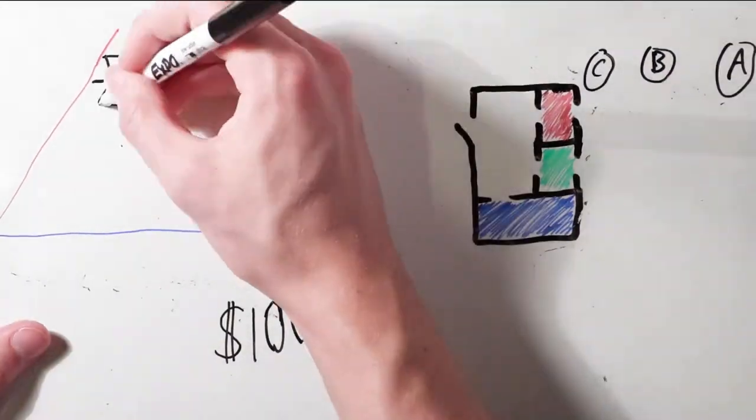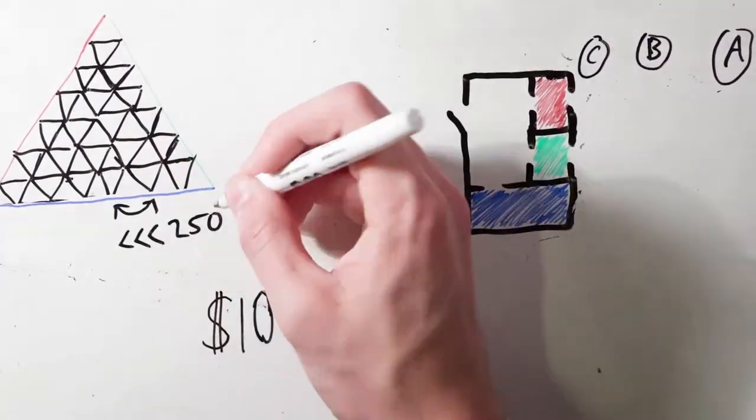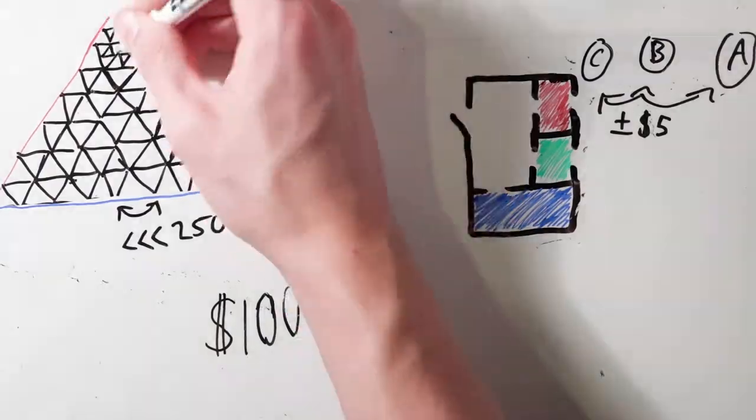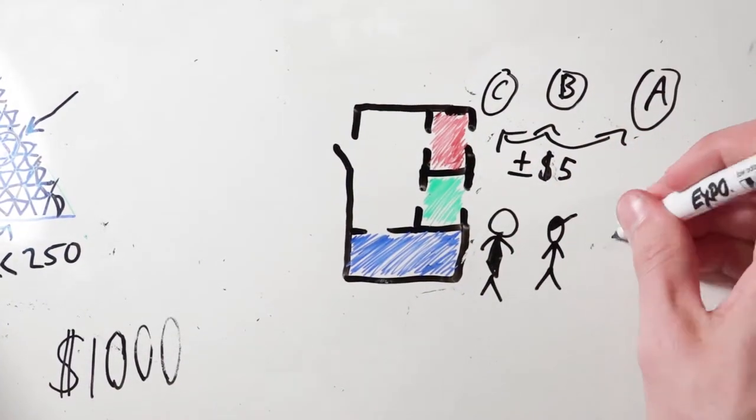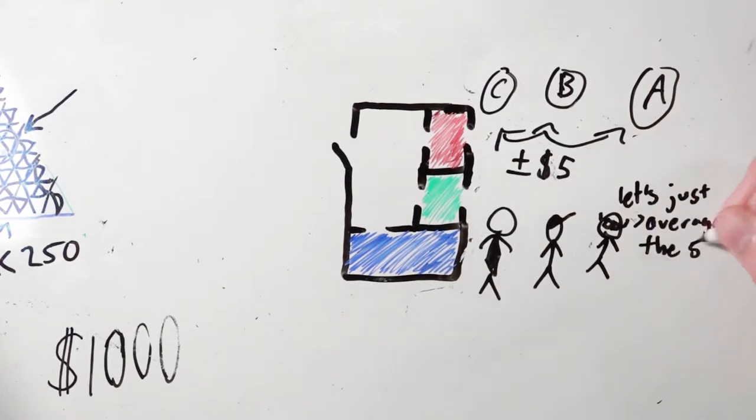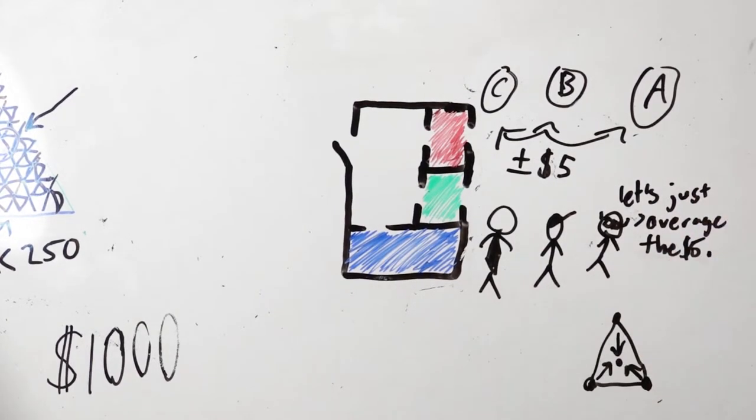We just need to add more triangles, which could result in differences between points of only five dollars, or less with more triangulation. This difference is so insignificant that the roommates can simply average the prices of the three rooms, and end up with three different rooms for fairly chosen prices.